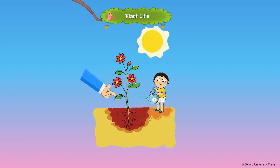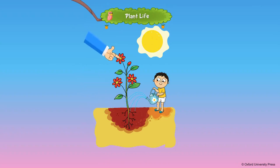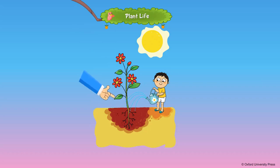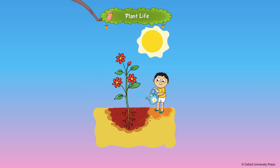Plants have different parts. This is the leaf. This is the flower. This is the stem. This is the root. The leaf, the flower, the stem and the root are the main parts of the plant.